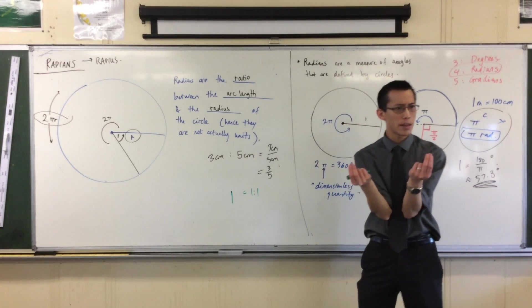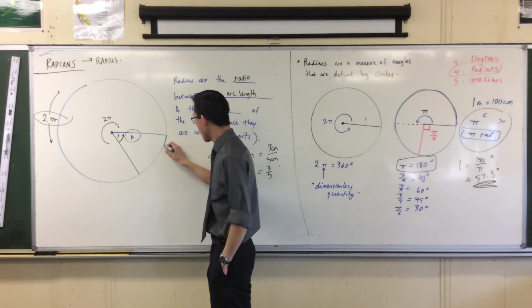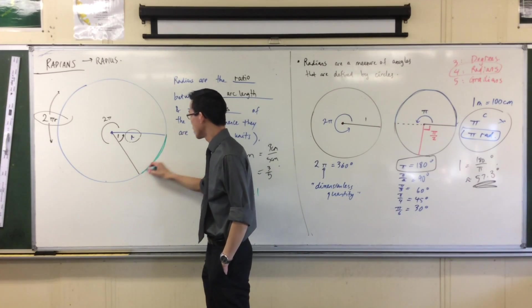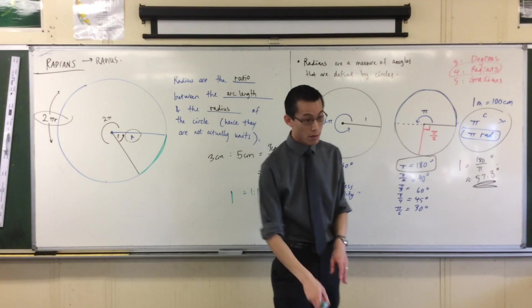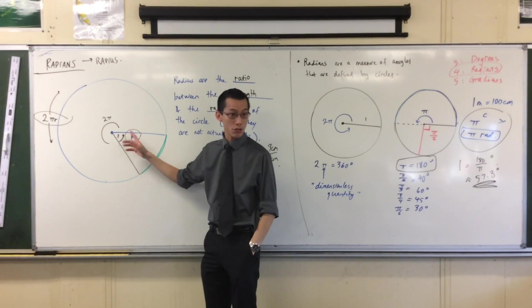What two quantities am I talking about again? The radius. I'm talking about the radius and the arc length. That guy there. That's the arc length that's been traced out by one radian. Do you see it?